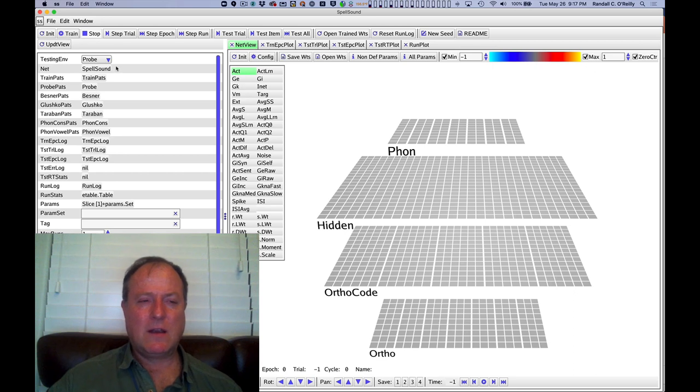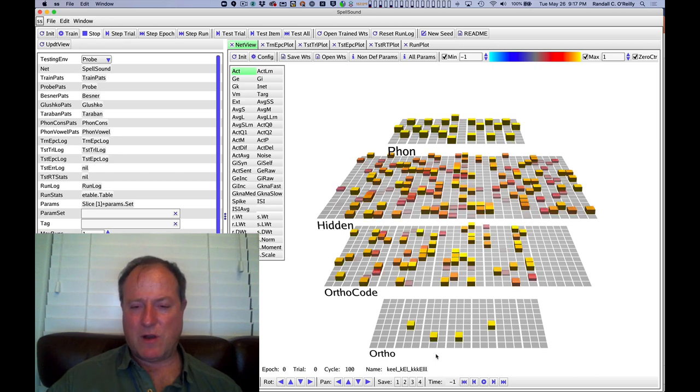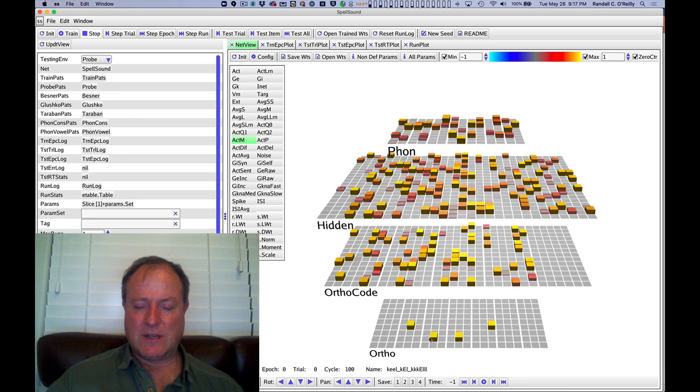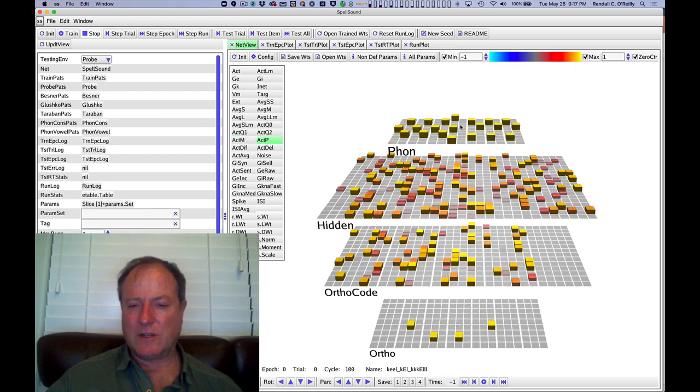Here's the network. As usual, we train the model using minus-phase, plus-phase, error-driven learning, presenting the written form of the word on the orthographic layer, and then the pronunciation on the phonological layer.